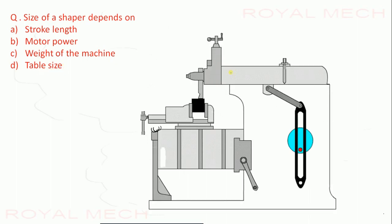The size of a shaper depends on: stroke length, motor power, weight of the machine, or table size. This is the shaper machine, which removes material with a cutting tool. The size of the shaper machine is dependent on stroke length — the length it travels during a stroke determines the size of the shaper. Therefore, option A is correct.